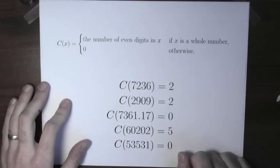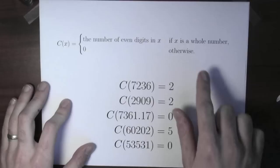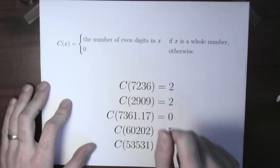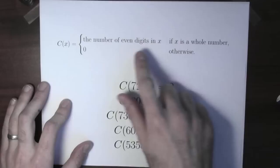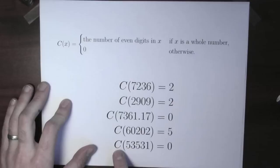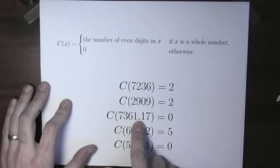For 60,202: it's a whole number, and all five digits — 6, 0, 2, 0, 2 — are even, so the value is 5. For 53,531: it's a whole number, but counting the digits — 5, 3, 5, 3, 1 — they're all odd, so there are no even digits and the value is 0. If I plug in a number that's not a whole number, I use the 'otherwise' part of the definition, and the function at that point is just 0.